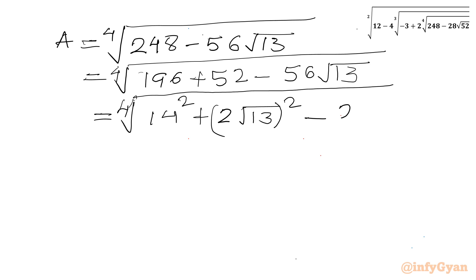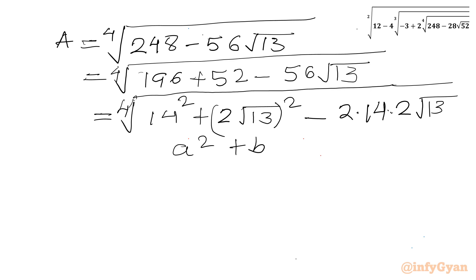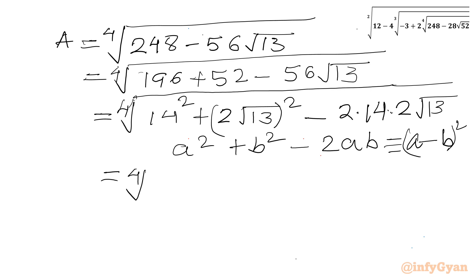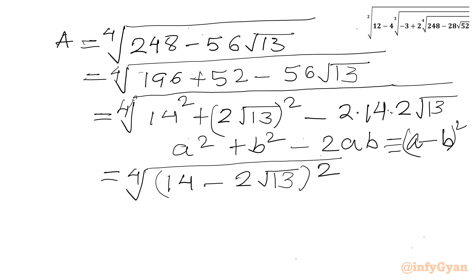This middle term can be written as 2 times 14 times 2√13, giving 56√13. So we have a² + b² − 2ab inside the fourth root, which we write as (a − b)², where a = 14 and b = 2√13. Taking the fourth root of a perfect square gives a square root.